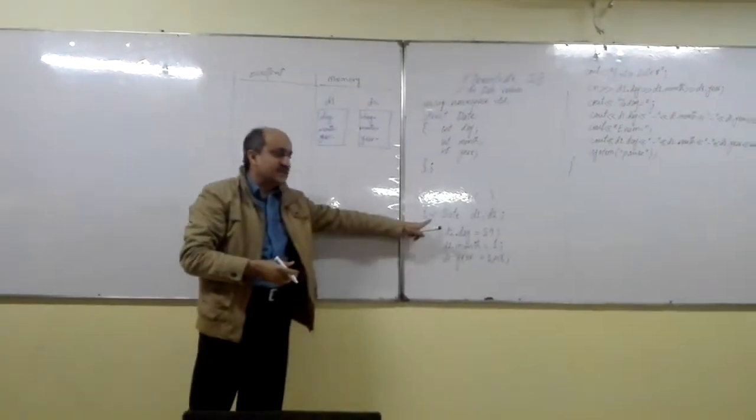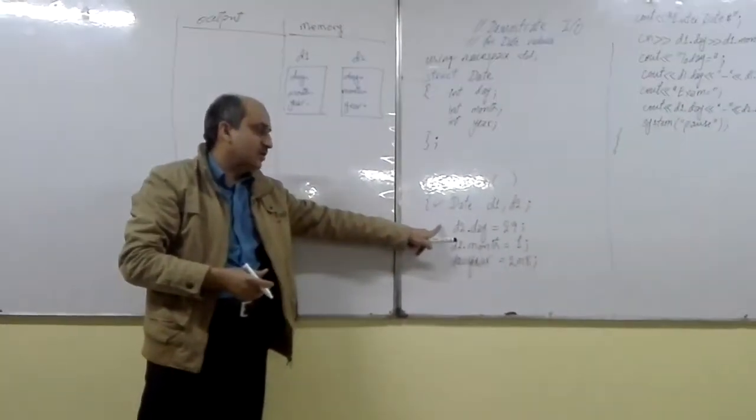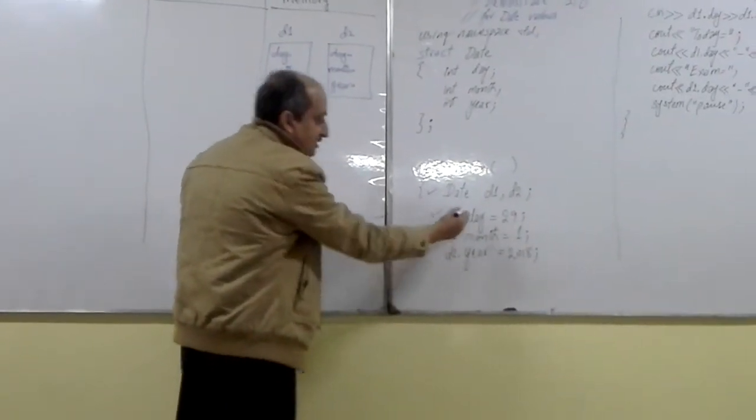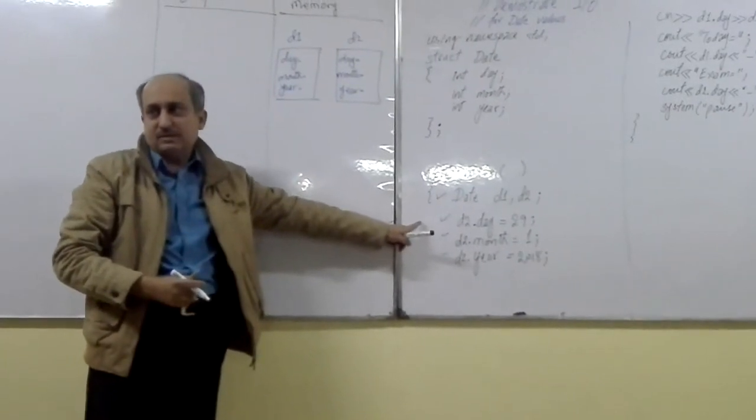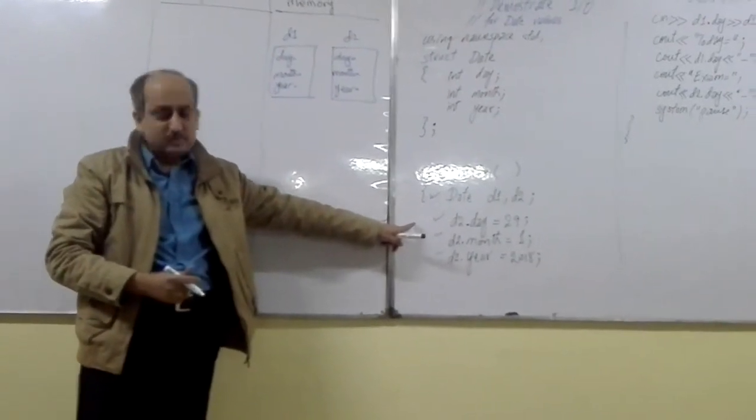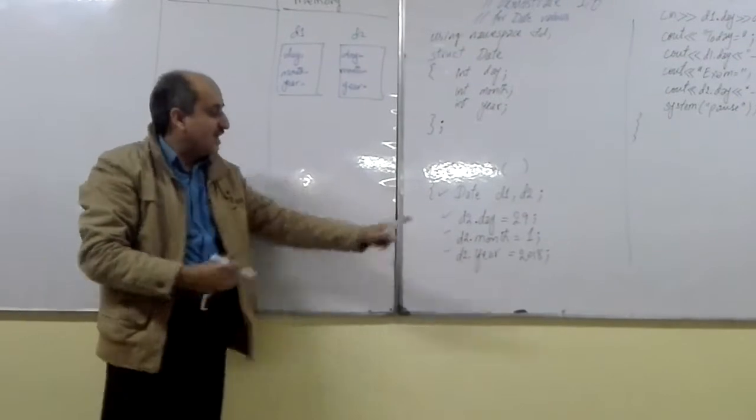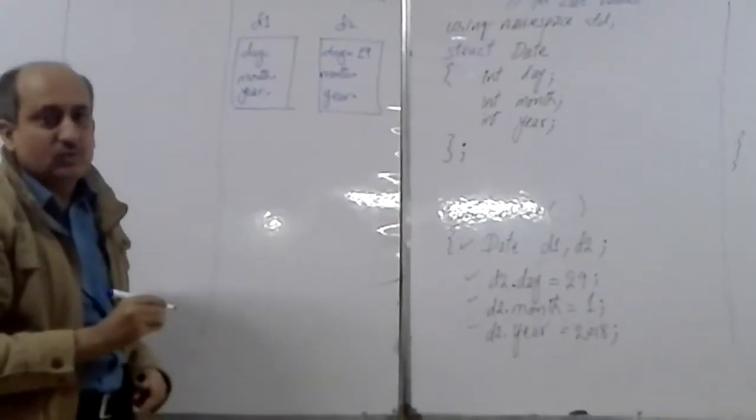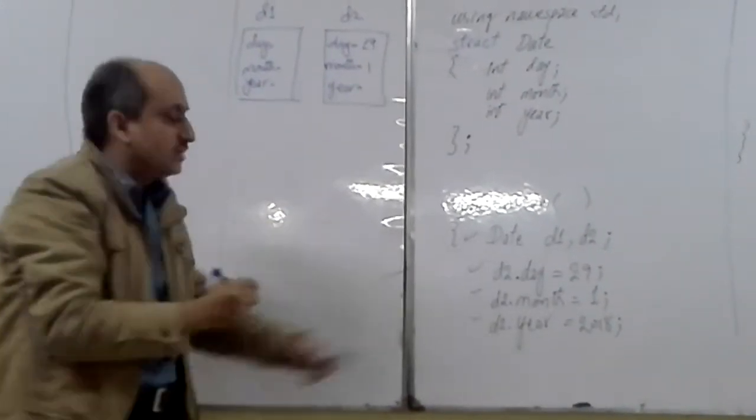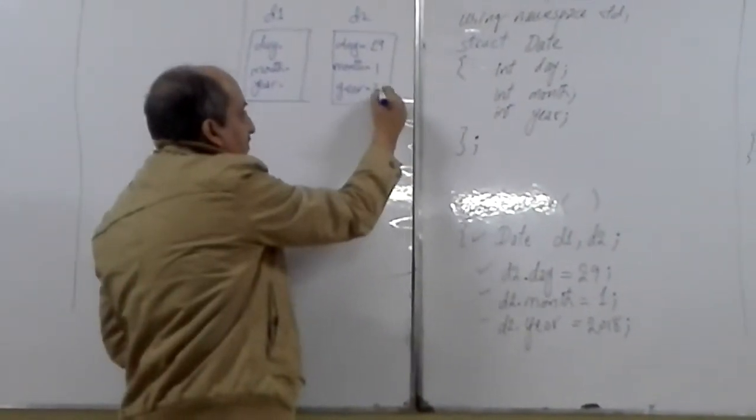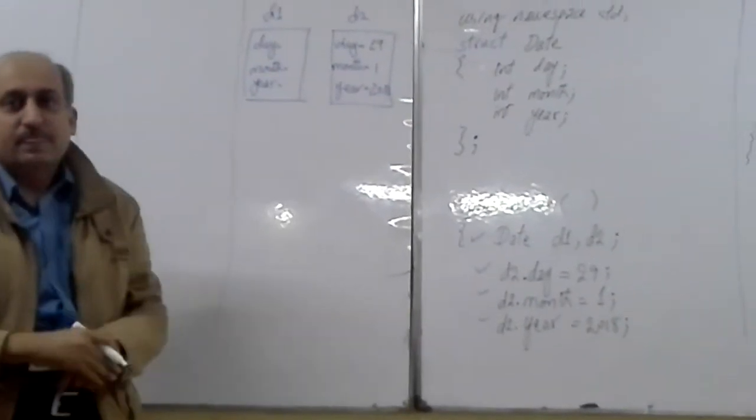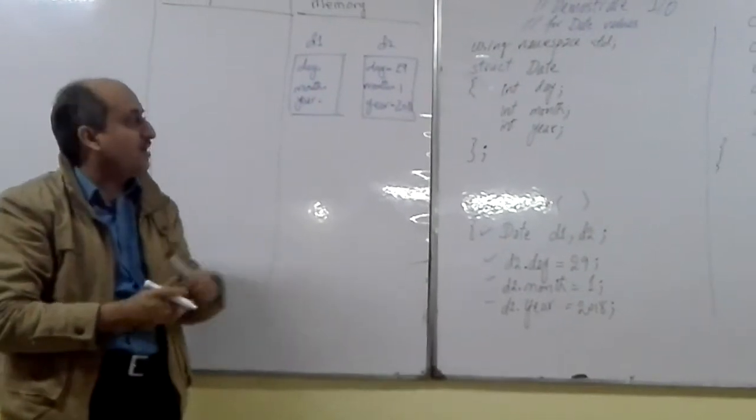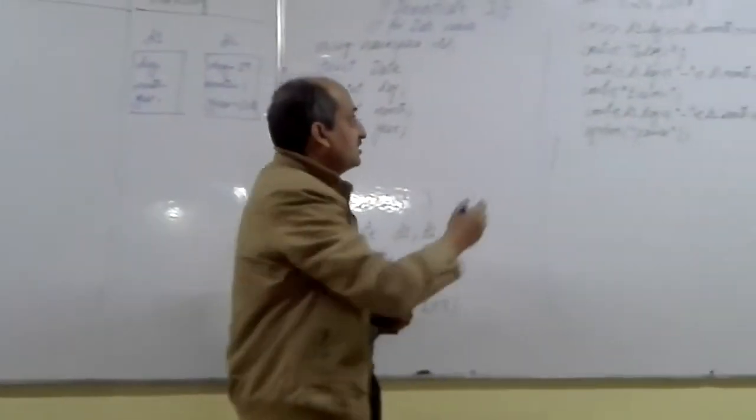After execution, after the creation of the variables, control of execution will execute these three independent assignments. 29 will be saved in day of D2, then 1 will be saved in month of D2, then 2018 will be saved in year of D2. After executing these assignment statements, control of execution will move to the next statement.